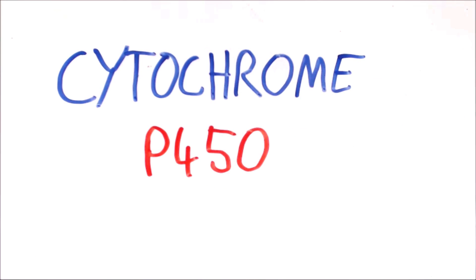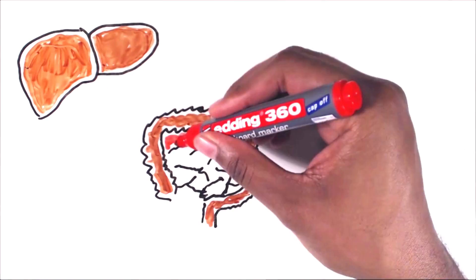One of the major drug metabolizing enzymes is known as Cytochrome P450 and is often found in the liver, gastrointestinal tract, and the kidney.